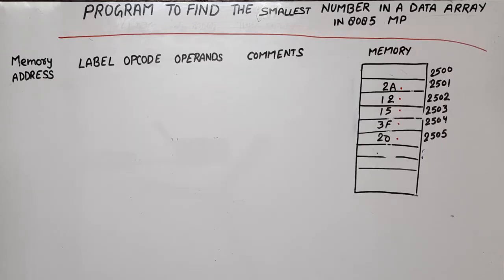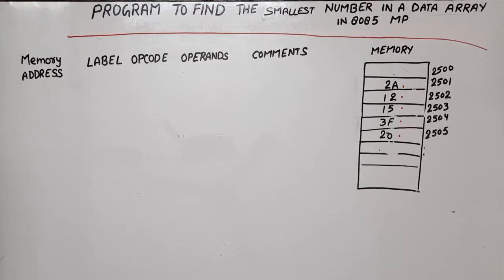Hello everyone, in this video lecture of 8085 microprocessor programming, I am going to discuss a program to find the smallest number from a data array. I have taken these 5 bytes: 2A, 12, 15, 3F, and 20. We have to find out the smallest number. You can easily see that 12 is the smallest number, but with a large data set, we need a systematic process.